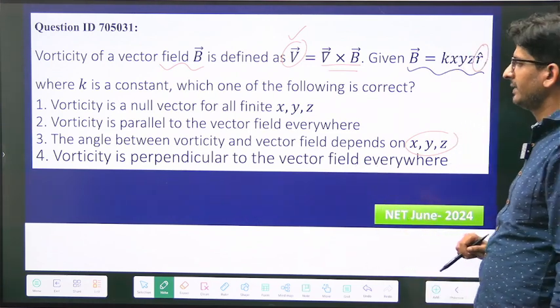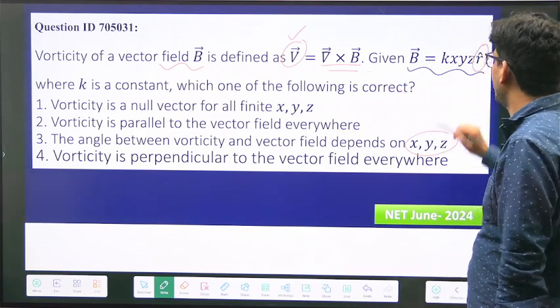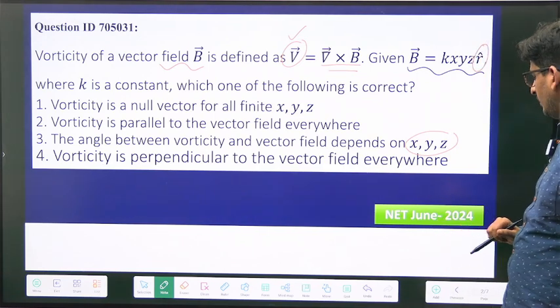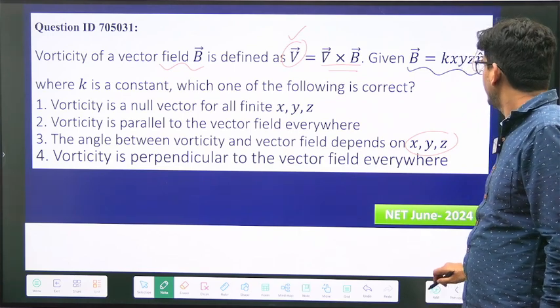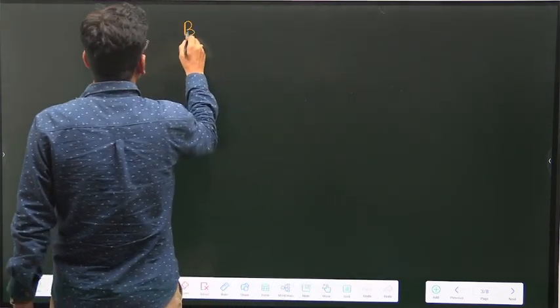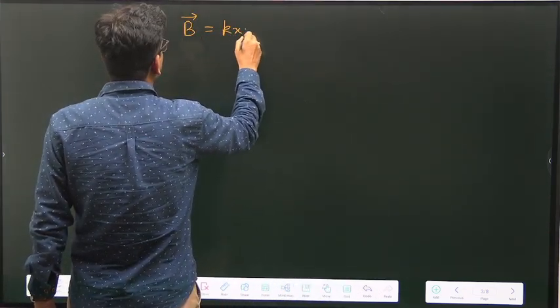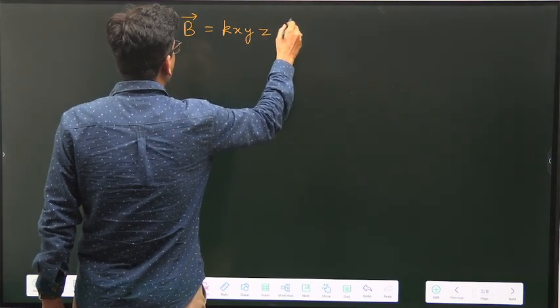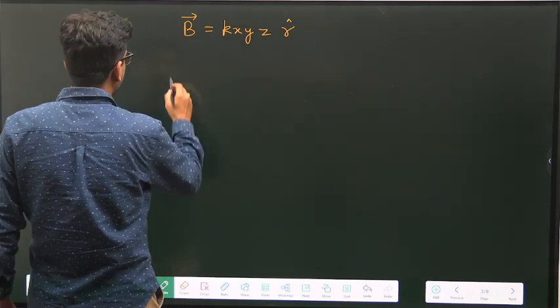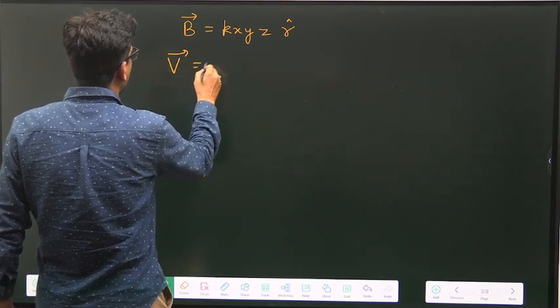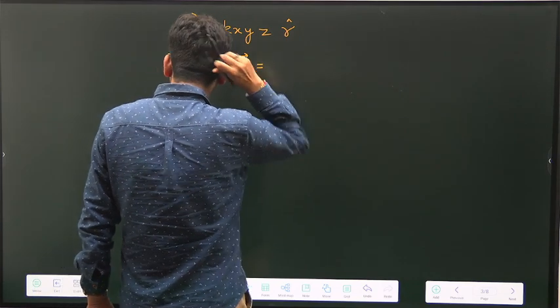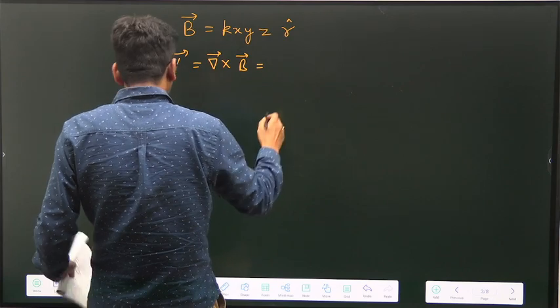So if you just go by very simple calculation, B is equal to K X Y Z R cap, and V is given by del cross B. So this will be just write the curl: it will be 1 by R squared sine theta and the determinant R cap, R theta cap, R sine theta phi cap.